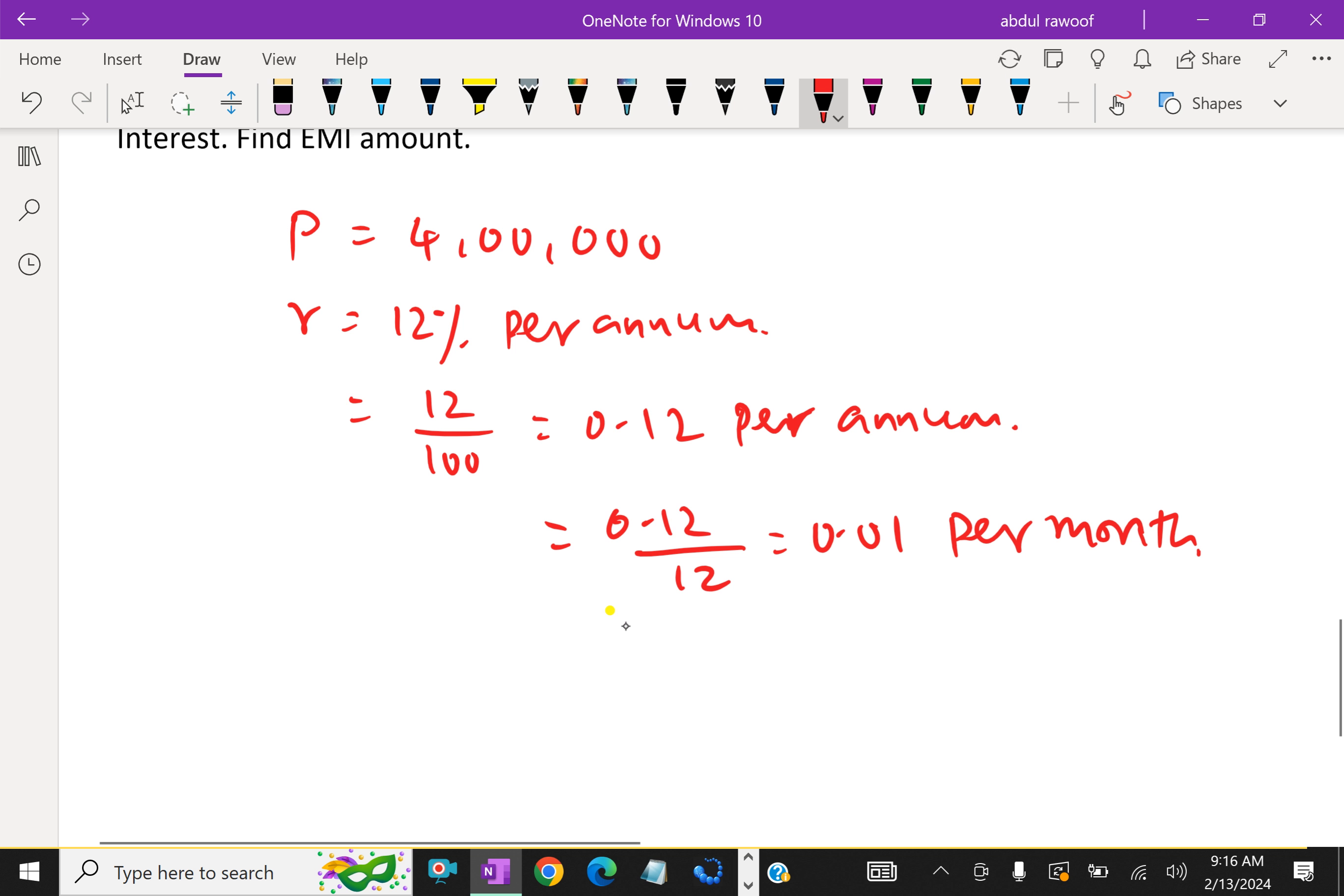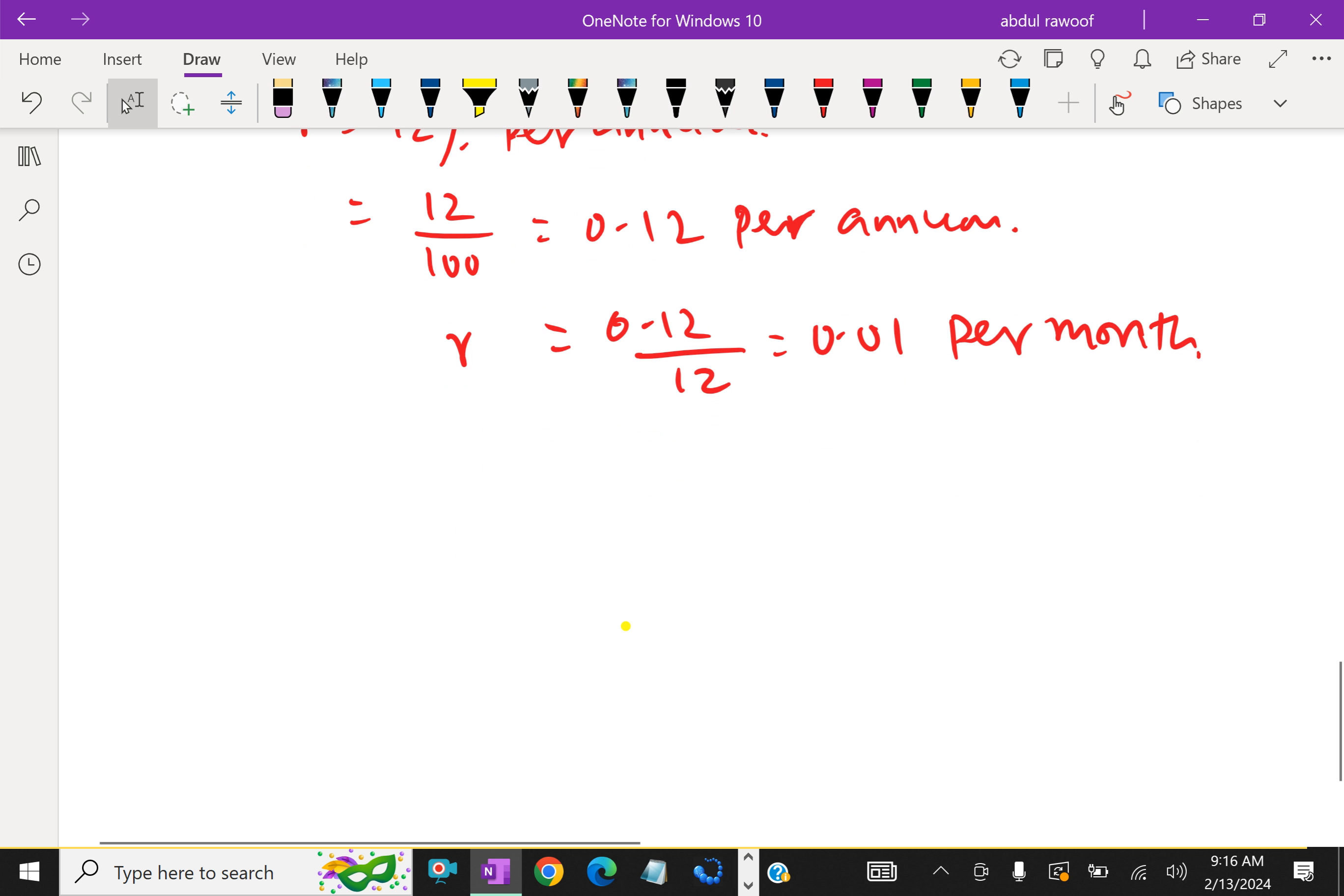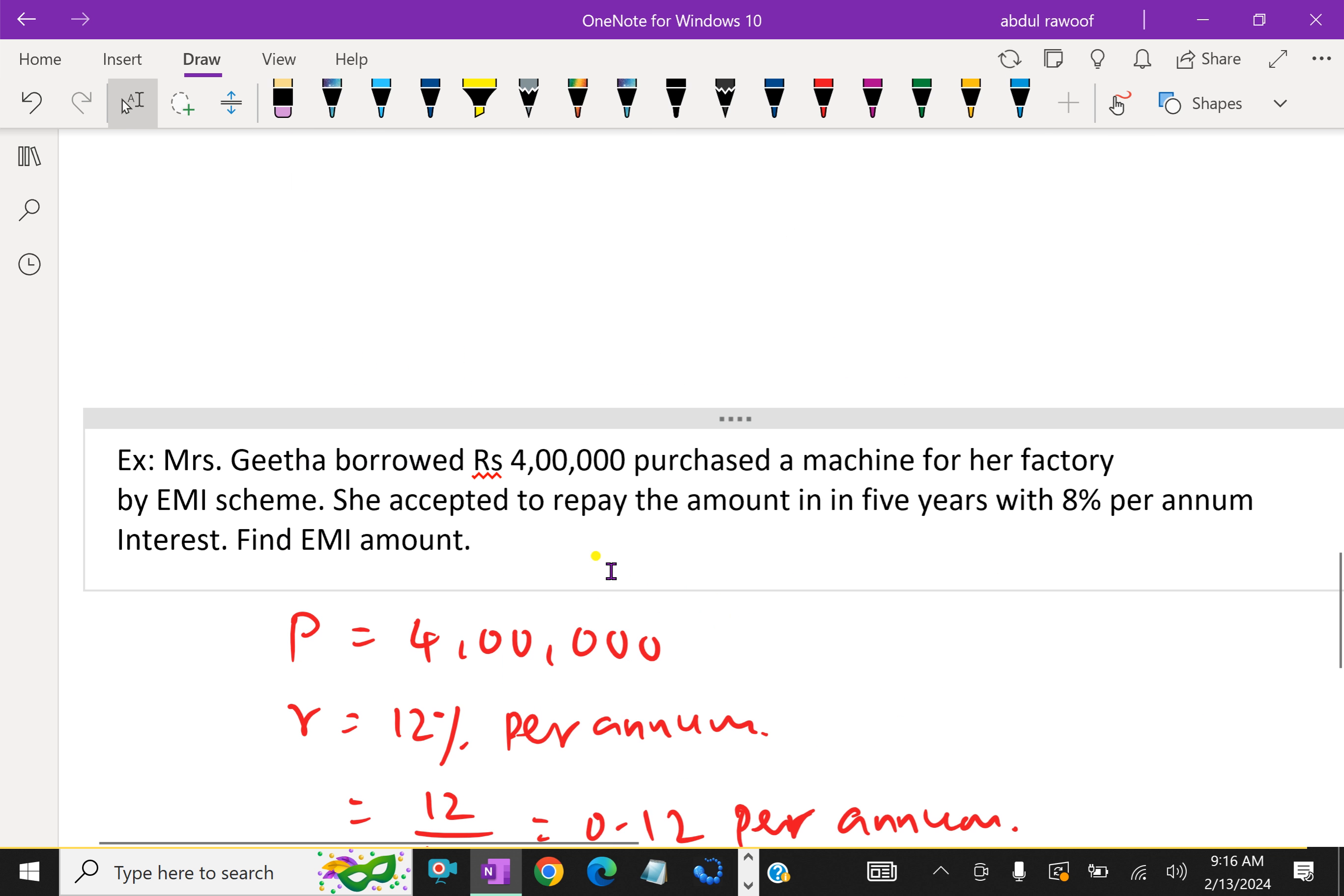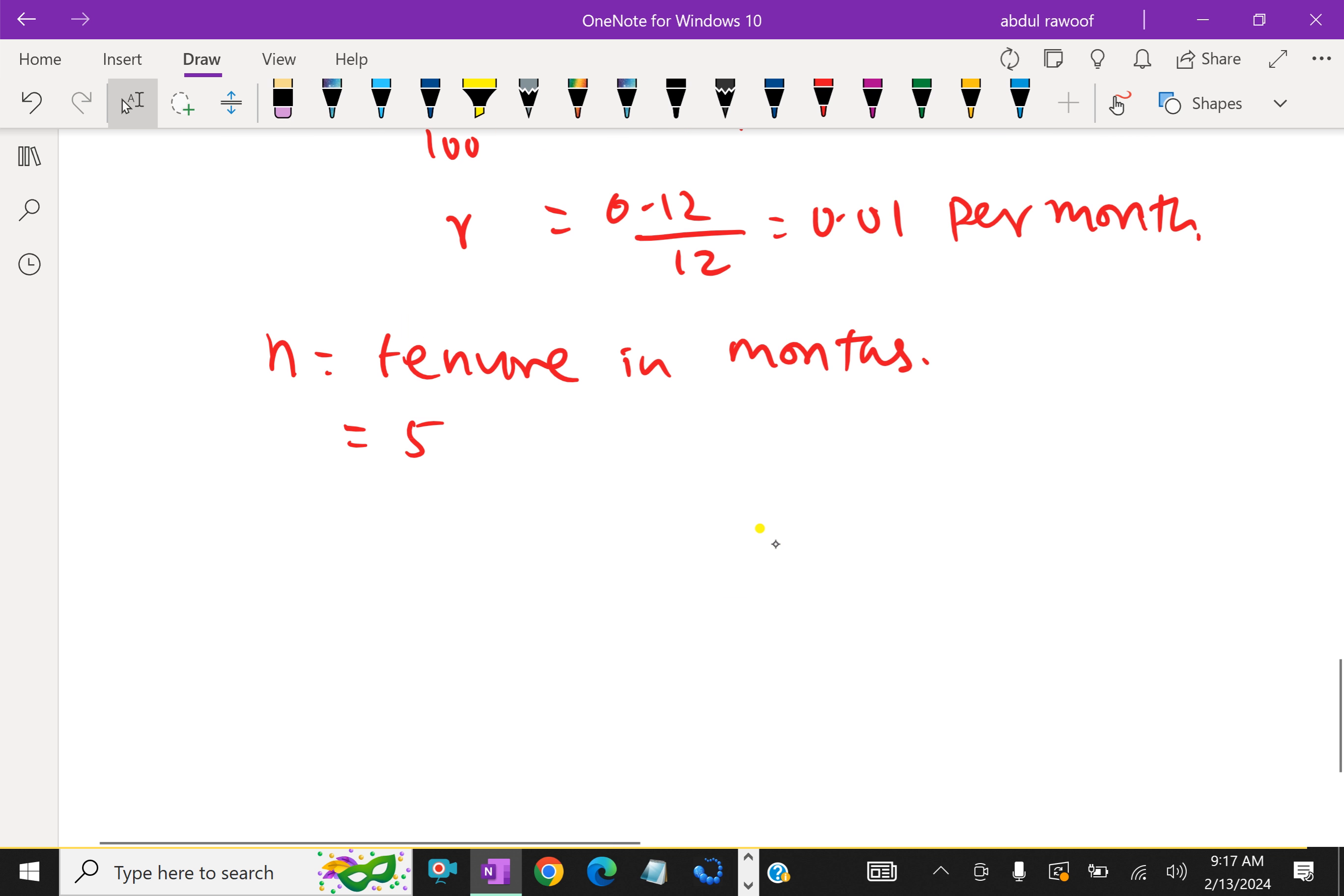Now, n equals tenure in months. Here, she borrowed a loan for 5 years. That means tenure in months is 5 years into 12, which is 60 months. That is 60 tenures to repay.